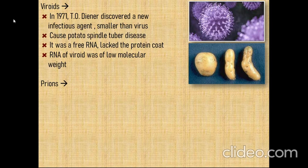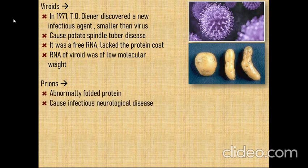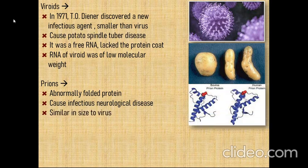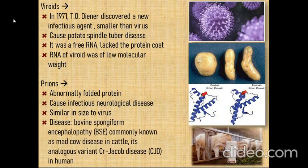Next, we will talk about prions. These are also different from viruses — they are abnormally folded proteins. They mainly cause infectious neurological disorders. Their size is similar to viruses. The disease they mainly cause is bovine spongiform encephalopathy, commonly known as mad cow disease in cattle. A similar disease found in humans is Creutzfeldt-Jakob disease.